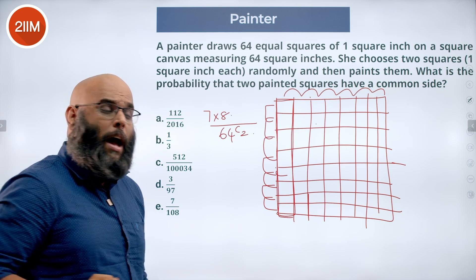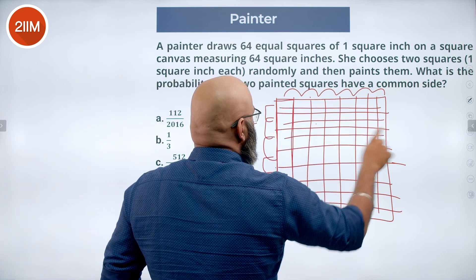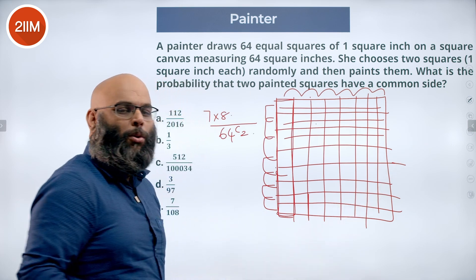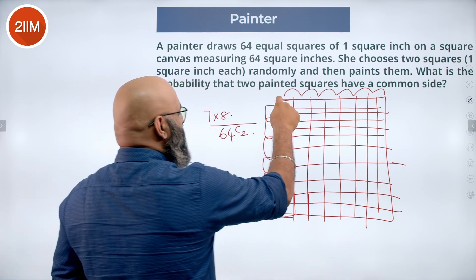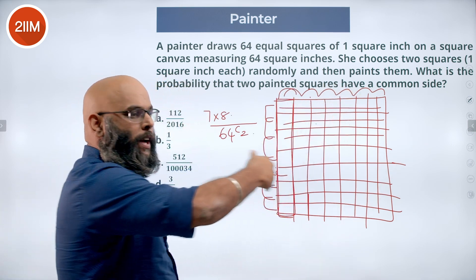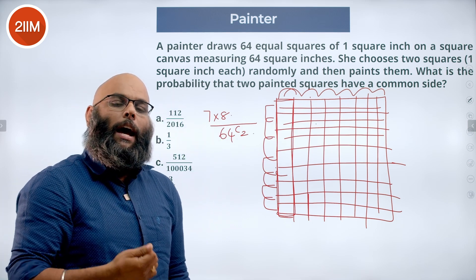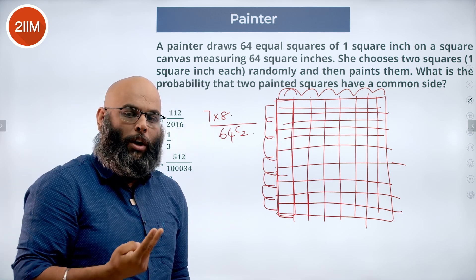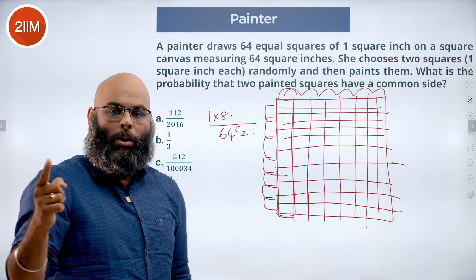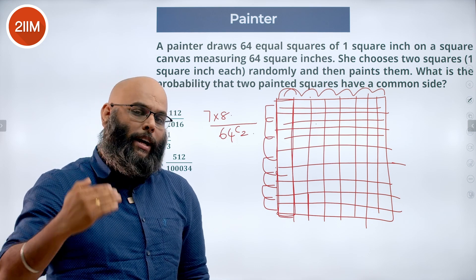Similarly this could have happened in any of the rows now. The same case happens in any of the rows. It could have been 1, 2, 2, 3, 3, 4, 5, 6 till 7, 8. So again I have another 7 combinations of 2 adjacent squares across 1 row. And the same thing happens for 8 different rows.